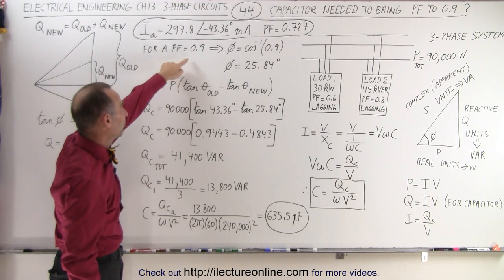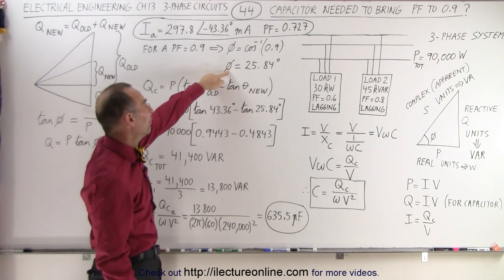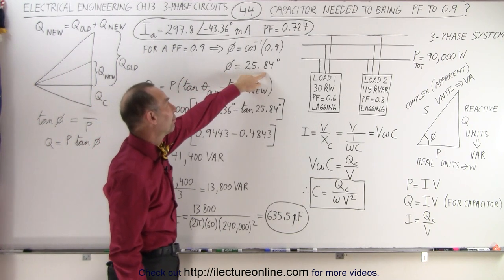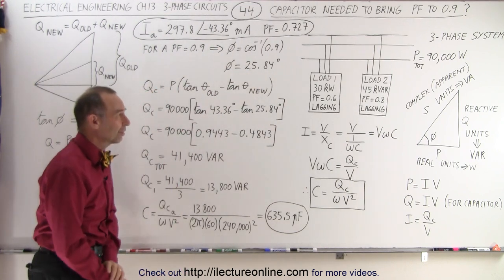In other words, a power factor of 0.9 means that we need to have a new phase angle of 25.84 degrees instead of the 43.36 degrees.